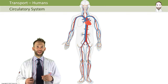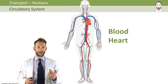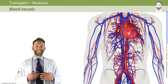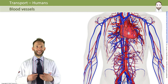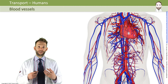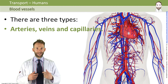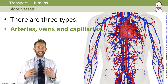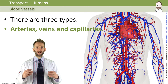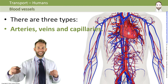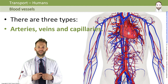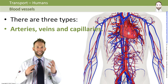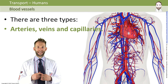In the human circulatory system there is blood, heart and blood vessels. Blood flows to almost every single cell in the body through a network of vessels. There are three types of blood vessels you need to know about: arteries, veins and capillaries. If you took them all out of your body and joined them together in one long line, an adult's circulatory system would stretch about 100,000 miles.